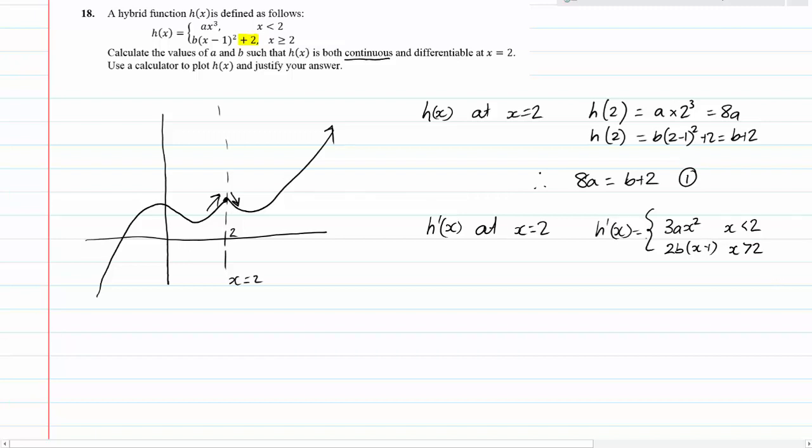And so that's our h dash of x function and therefore h dash of x at x equals 2 is going to produce either h dash of 2 equals 3a 2 squared which is equal to 12a or h dash of 2 is equal to 2b times x minus 1 which in this case is 2b times 2 minus 1 which is just equal to 2b. And so therefore we get 12a is equal to 2b as equation number 2.